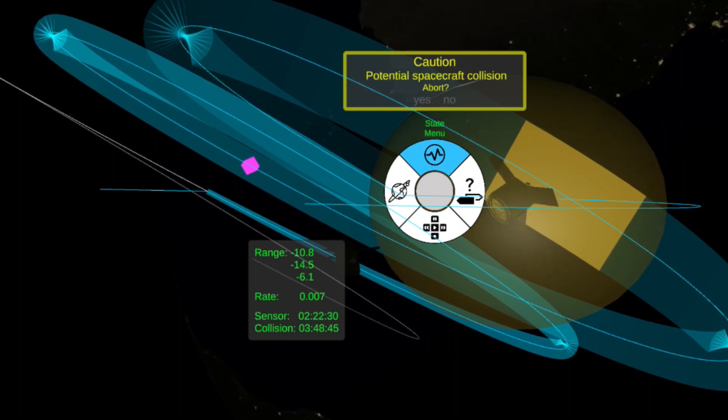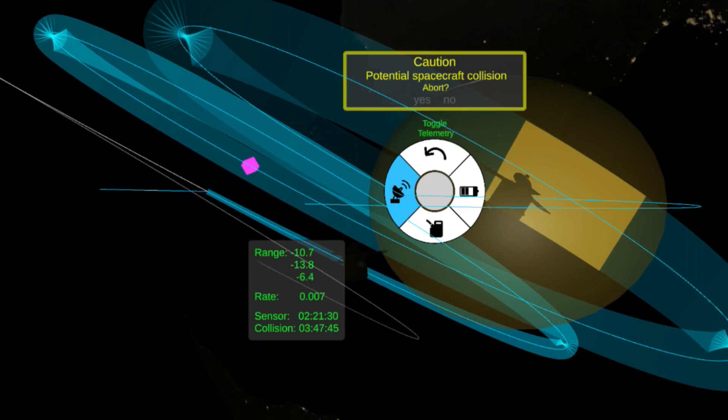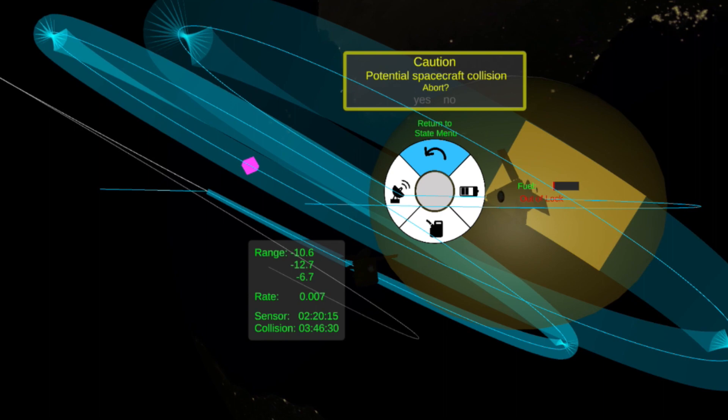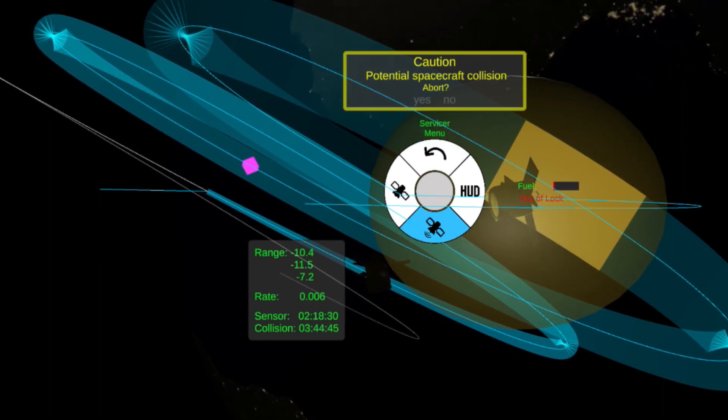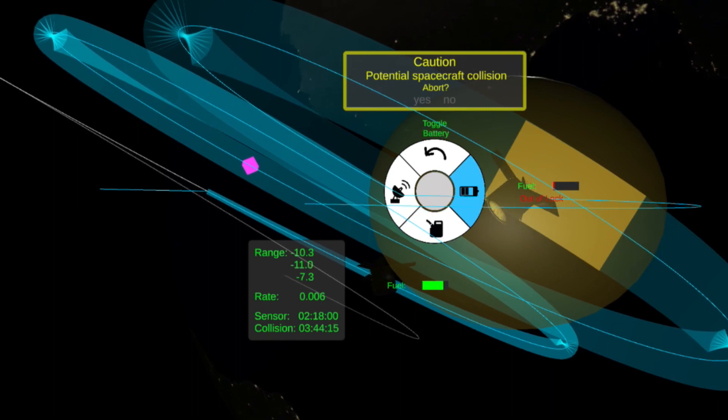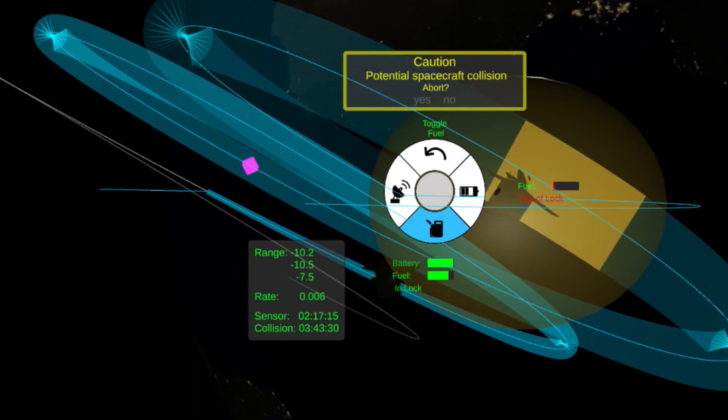Looking at the state menu, we can look at different information about those two particular satellites. For example, we can look at the telemetry and the fuel of the debris satellite and see that it is out of fuel and also has no telemetry. And in the servicer we can see that we are operating under normal conditions right now.